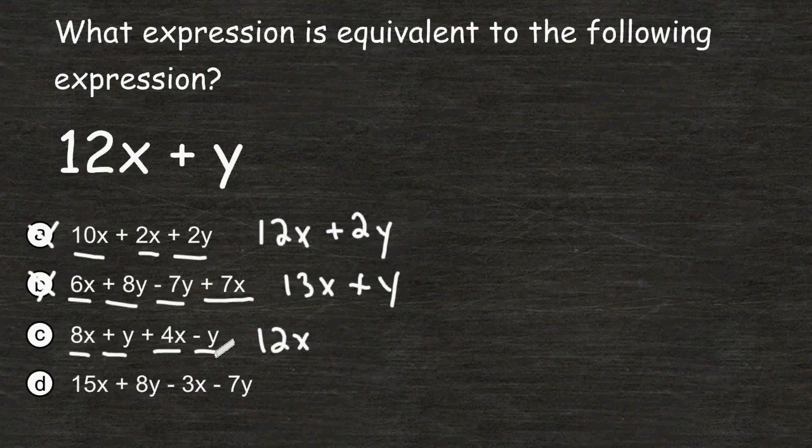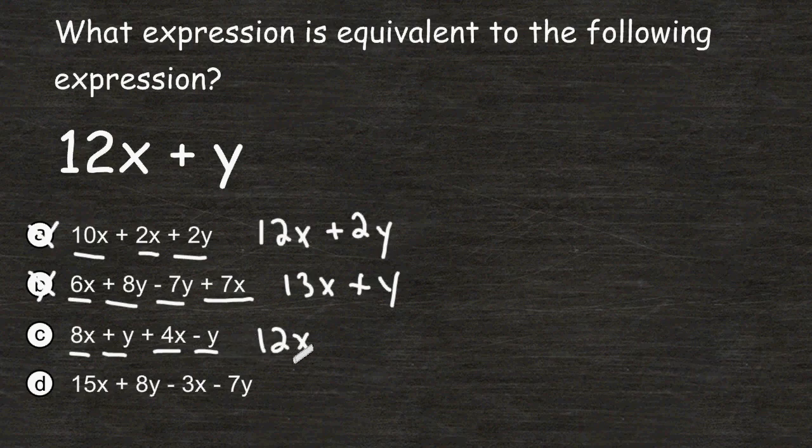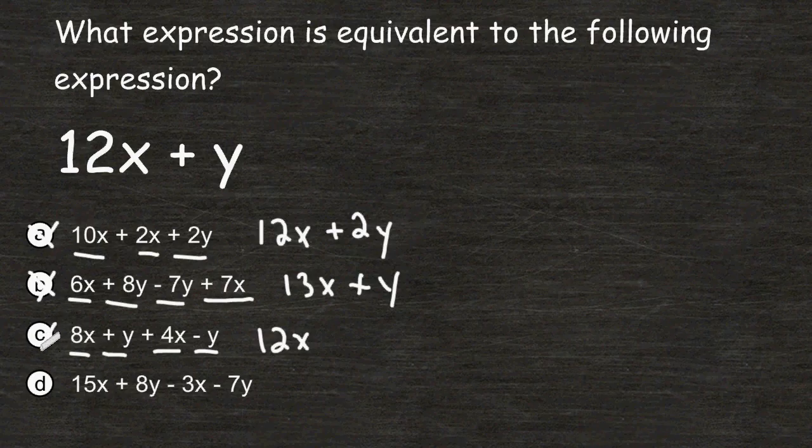So when simplifying choice C we get an expression of 12x which is not equivalent to 12x plus y. So we can eliminate C which means the answer must be D.